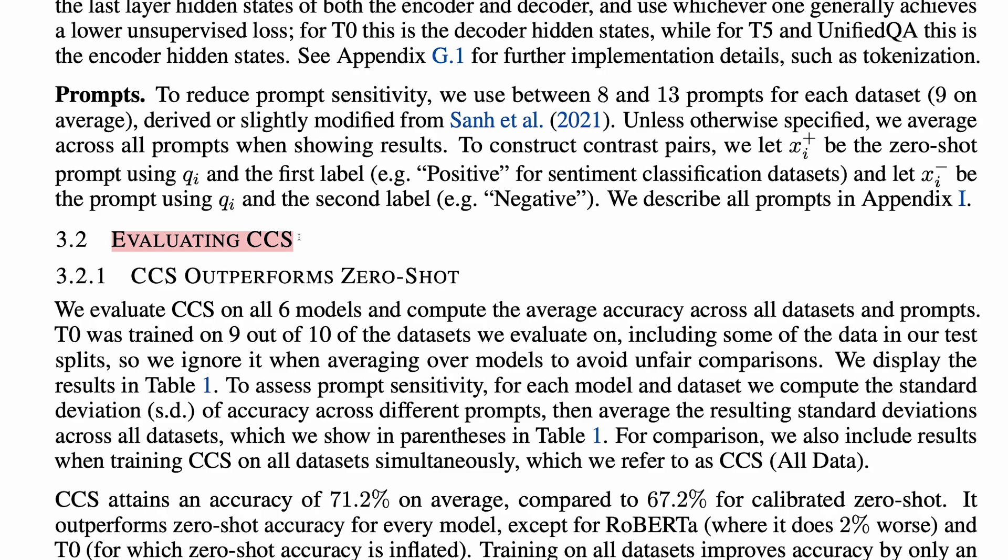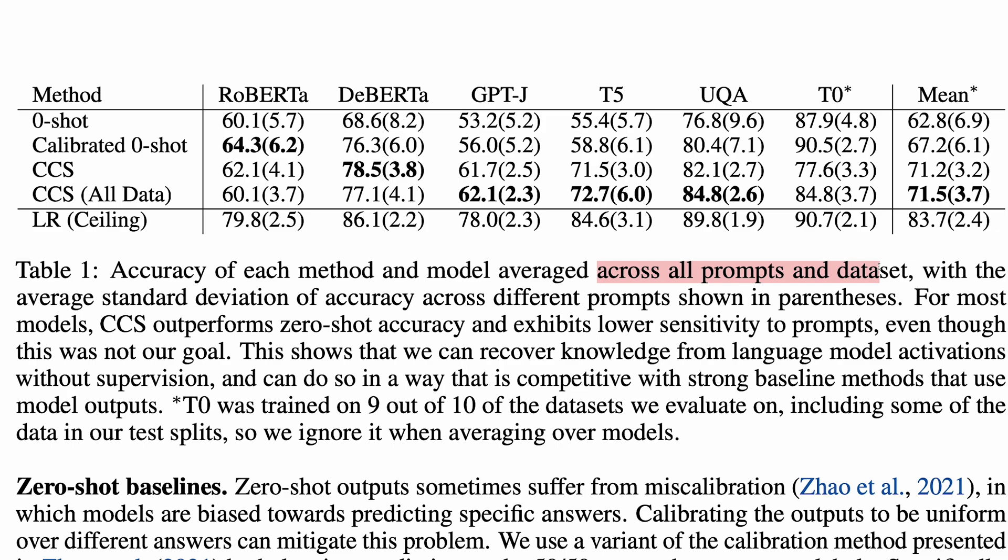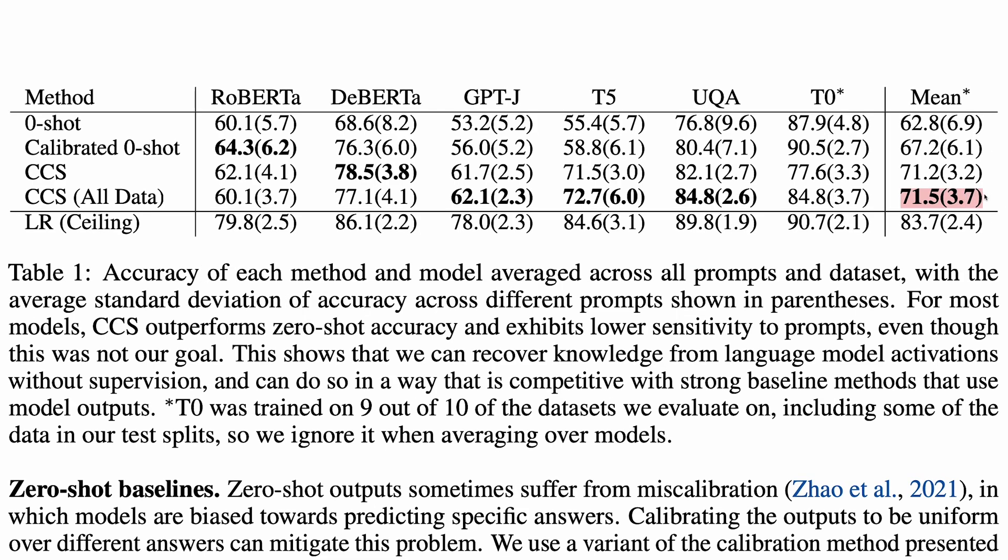On to the results. First, CCS outperforms zero shot. When averaging across all prompts and datasets, CCS is found to outperform the zero shot baseline and calibrated zero shot baseline. This is quite surprising, given how simple the loss functions are, though CCS is still a fair way short of the supervised logistic regression baseline.